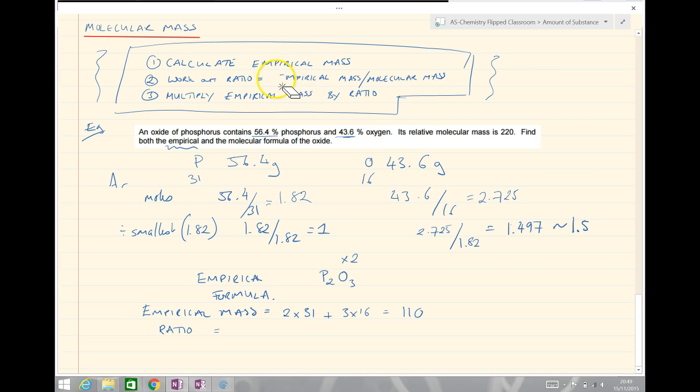The molecular mass over the empirical mass: 220 over 110, a ratio of 2. So our molecular formula is made up of 2 units of the empirical formula. Our molecular formula then becomes 2 times P2O3, giving us a molecular formula here for the phosphorus oxide P4O6. Simple as that.